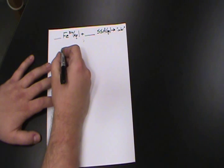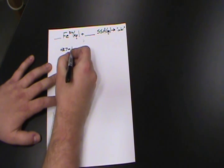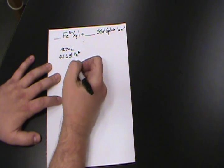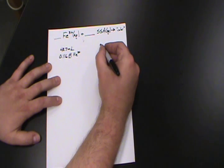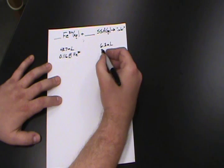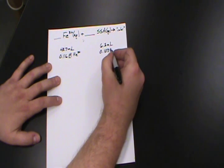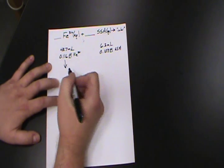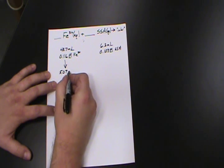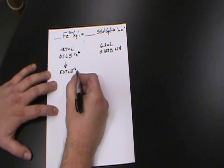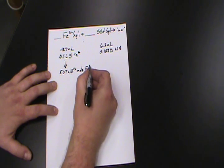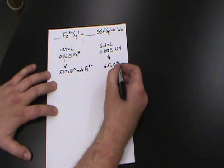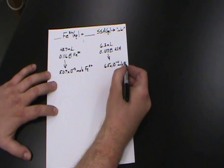So when I mixed up this first sample, I used 43.7 milliliters of 0.116 molar iron-3-plus solution, and I used 6.3 milliliters of 0.103 molar SSA solution. That means that I used 5.07 times 10 to the minus third moles of iron. And, 6.5 times 10 to the minus fourth moles of SSA.